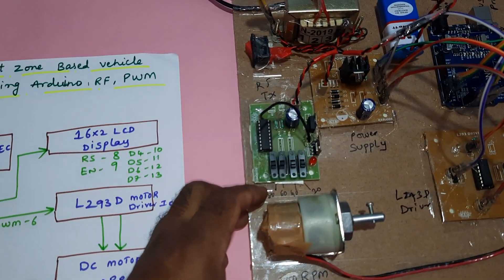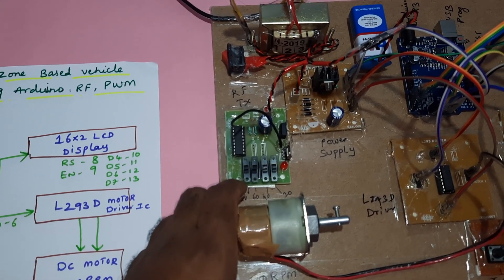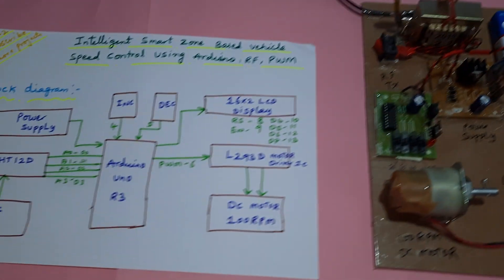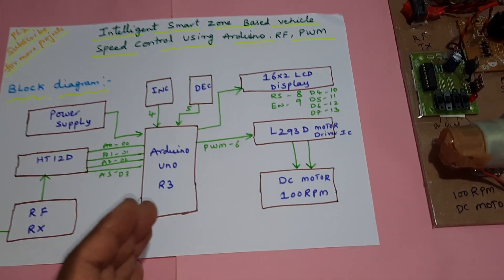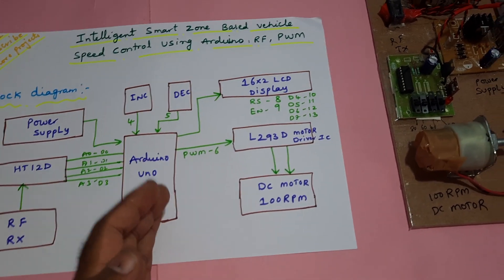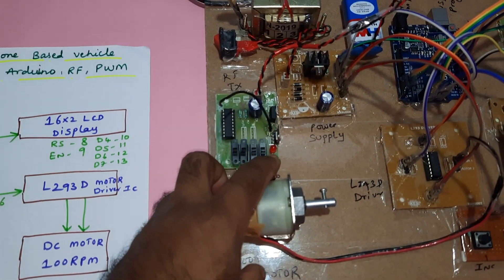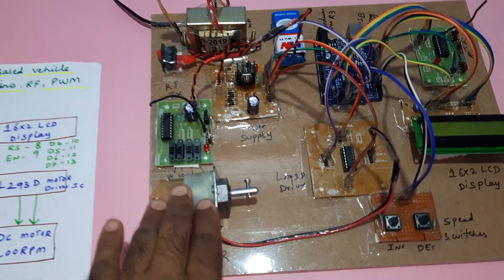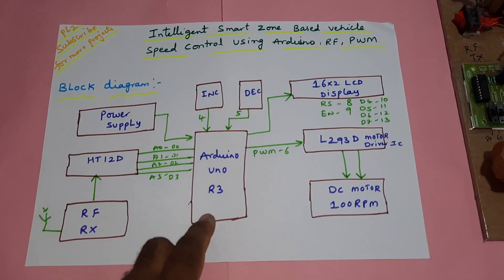There are four speed zones: 80, 60, 40, and 20 speed limits, with four push buttons corresponding to each speed limit. The vehicle speed will be controlled accordingly — if the vehicle is going at 80 speed and enters a restricted area with 20 speed, the motor speed will automatically decrease when the 20 speed zone is detected.